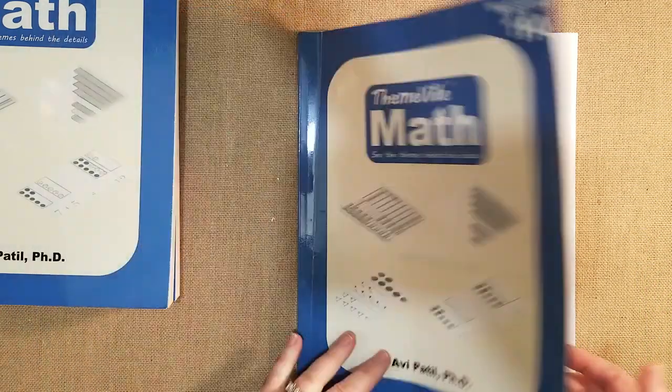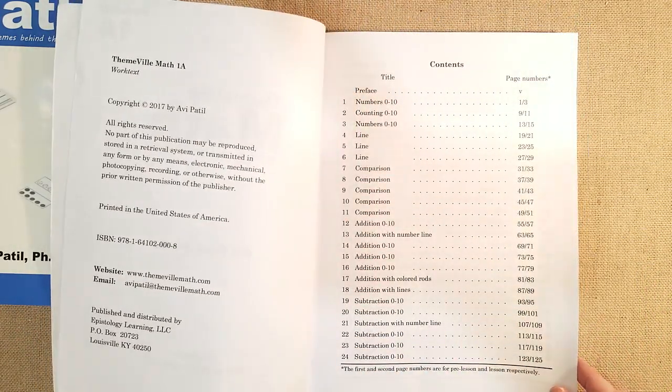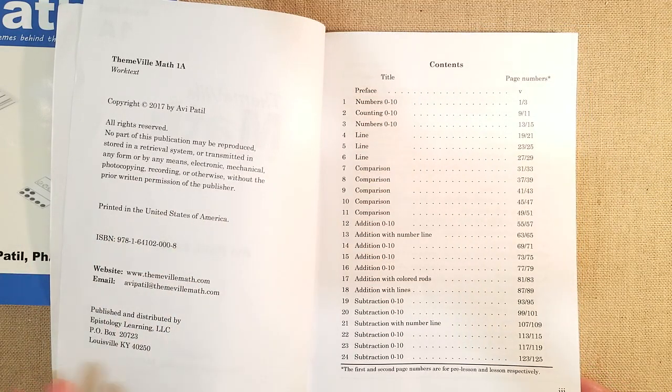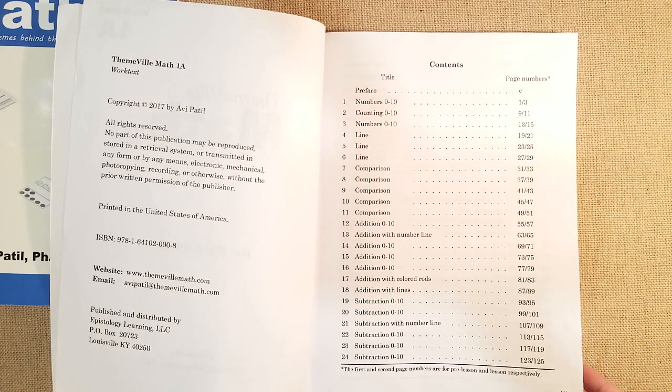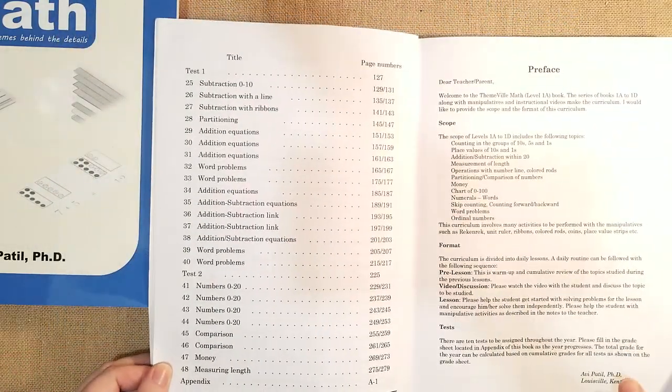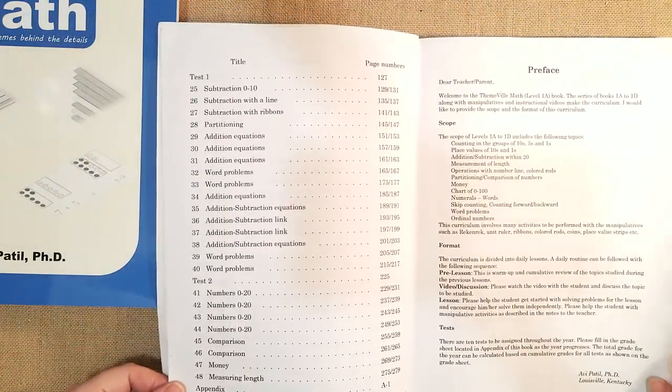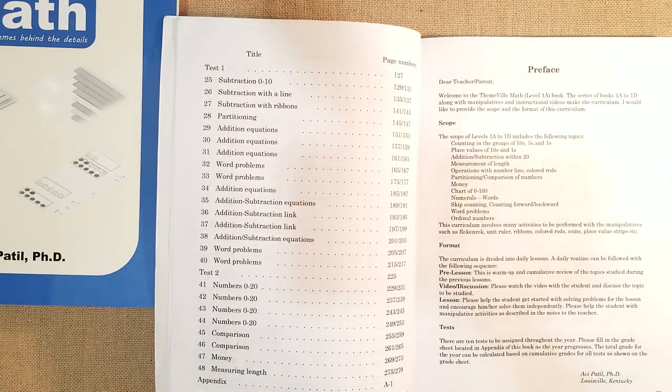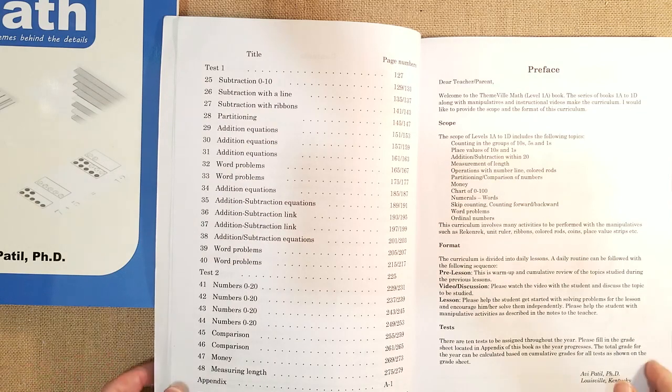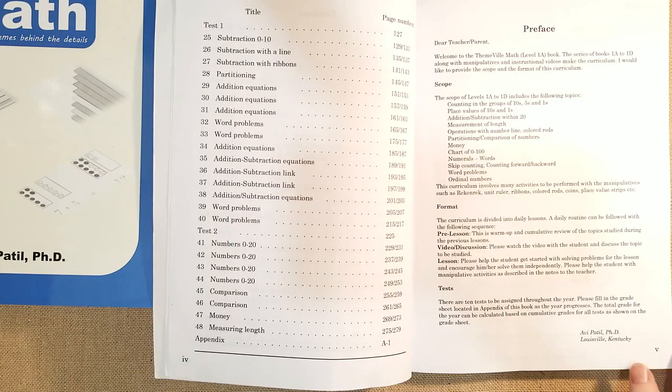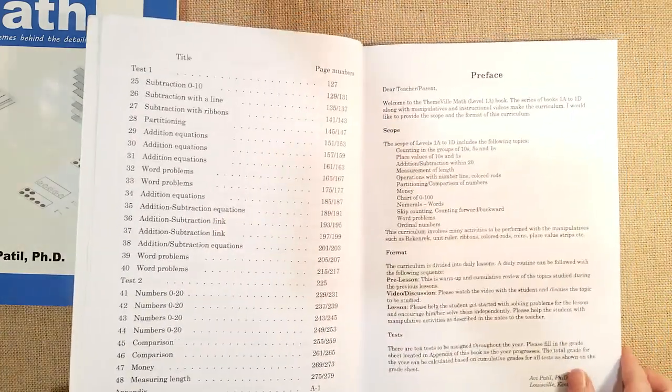So let's get started with the workbook 1A. It's going to be talking about numbers 0 to 10, counting 0 to 10, line, comparison, addition using the line numbers. They're going to introduce the color rods and they're going to start introducing subtraction from 0 to 10, partitioning, additional equations, word problems and they have some tests at the end which you can do or you don't have to do because you're the homeschool mom so you can do exactly what you want to do. They also touch a little bit on money and a little bit about measuring at the very end.